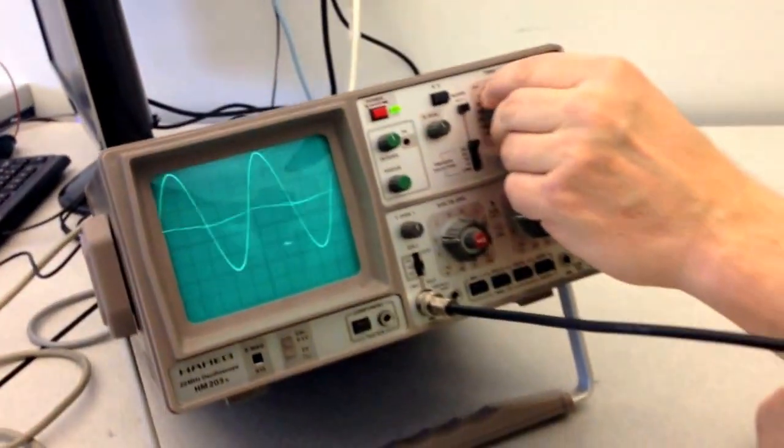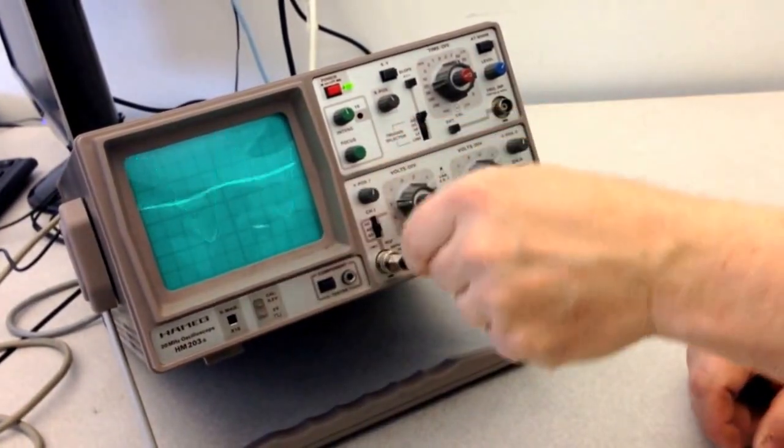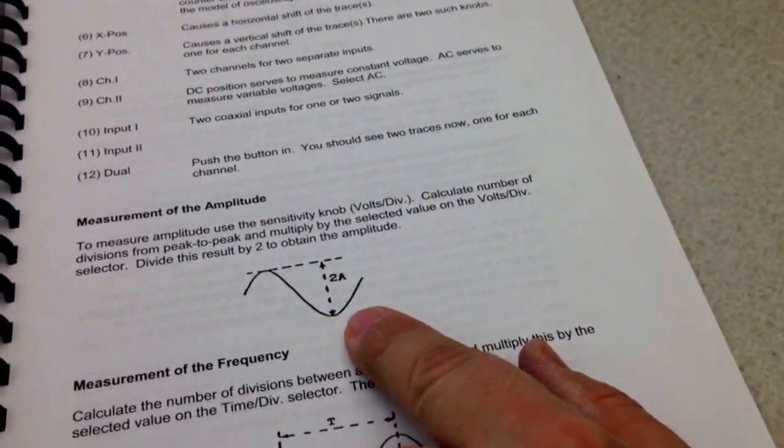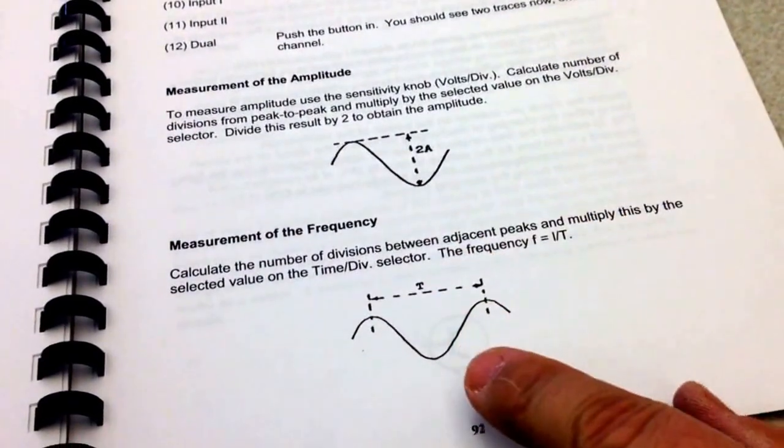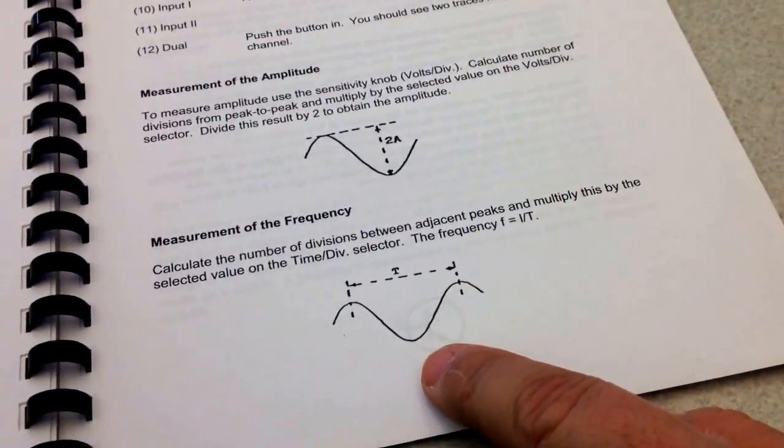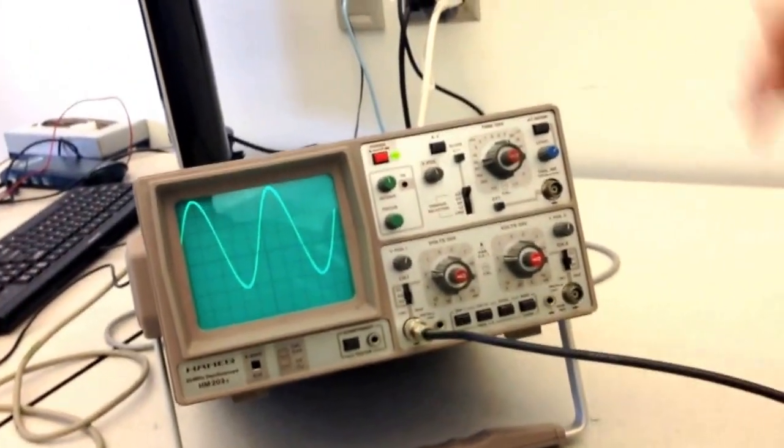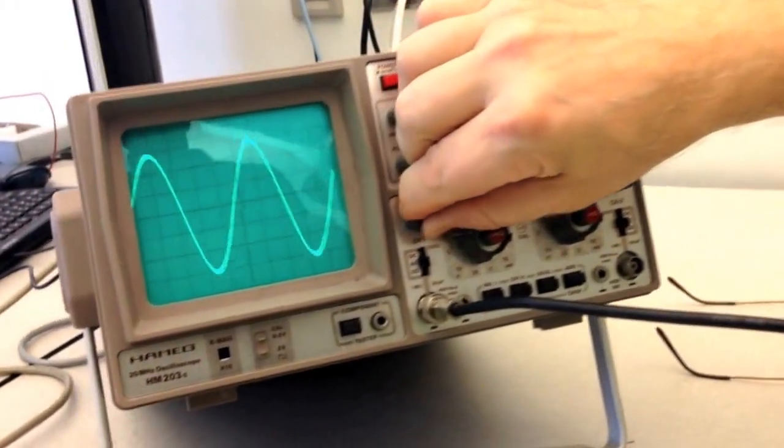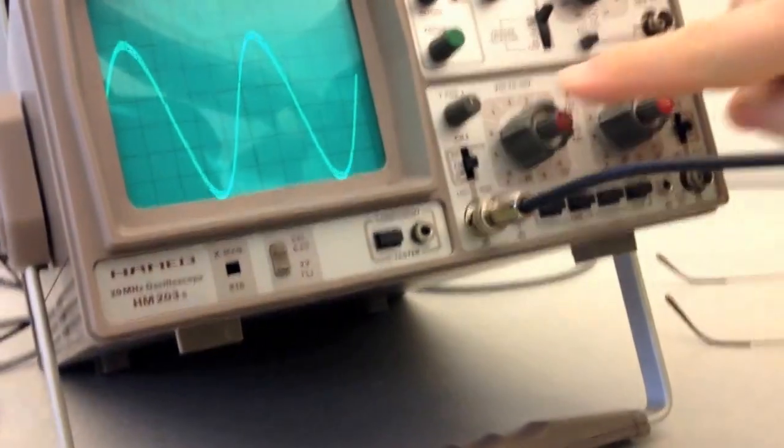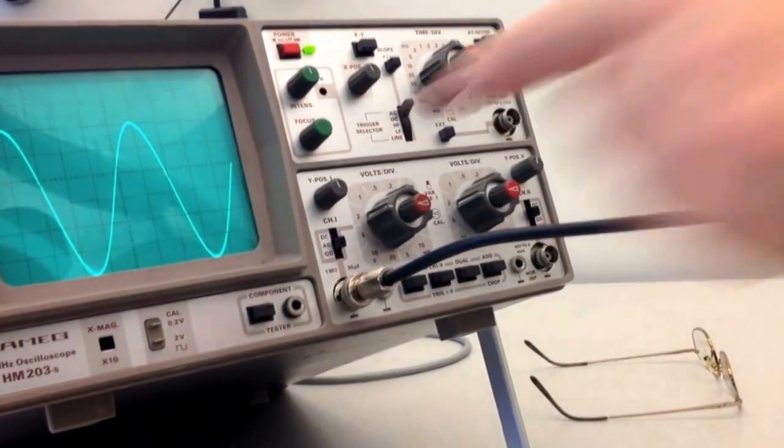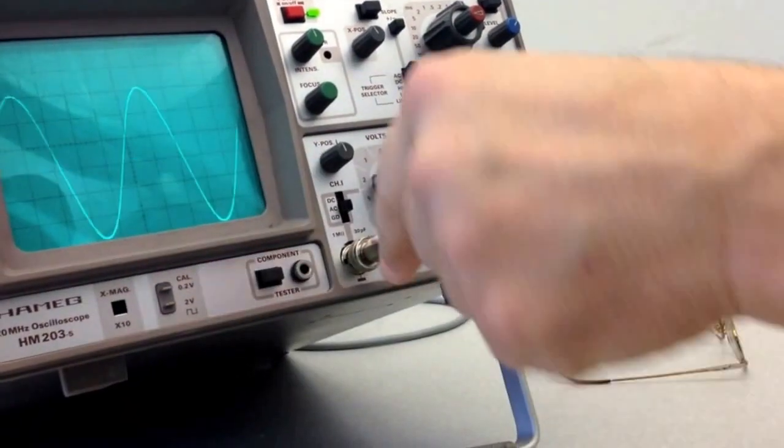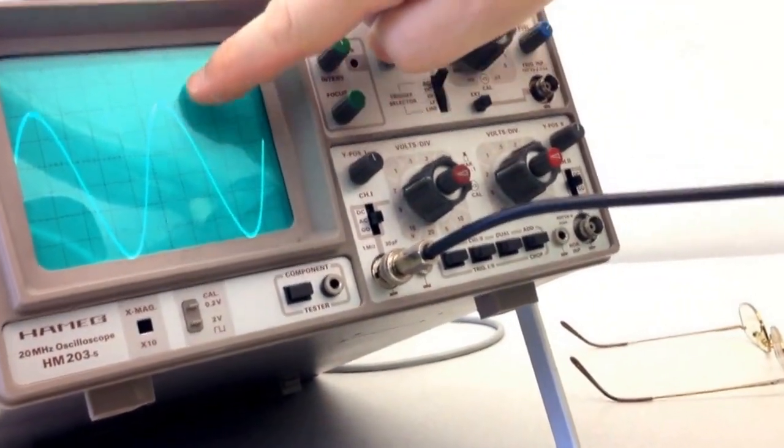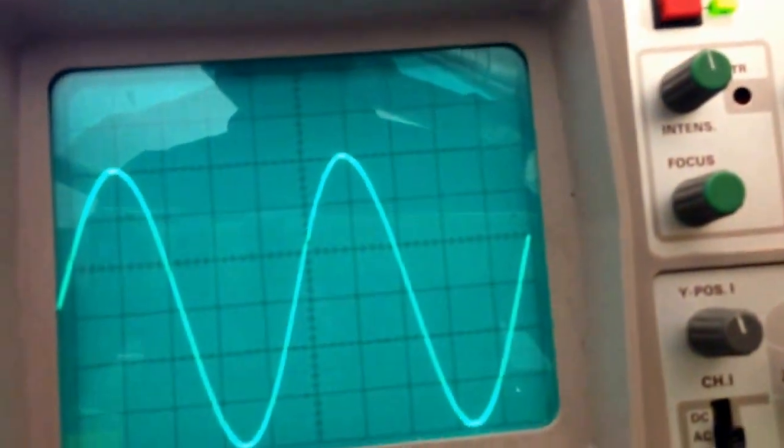So, if we have a signal like this, before you begin the experiment, you have to determine what the amplitude of the signal is in volts and what the frequency is of this signal in hertz. So, let's do that together really quick. We can move the signal up and down by adjusting these little knobs. And if we position the bottom of the signal on an arbitrary horizontal line, we see that there's one, two, three, four, five, six divisions from peak to peak.